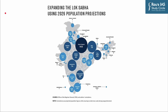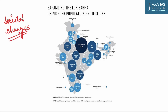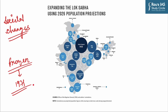What is required in India's political system? When India's government aims to control population through family planning, states that have successfully reduced their population should not face reduced political representation. Population control is not just about family planning programs; it is also driven by societal changes promoted by the leaders of southern states. Decreasing their political representation in the national parliament is not fair and might discourage other states from taking population control and societal change seriously.